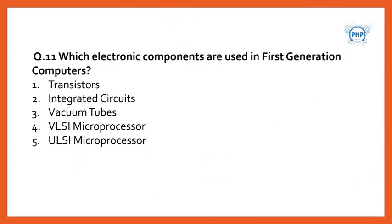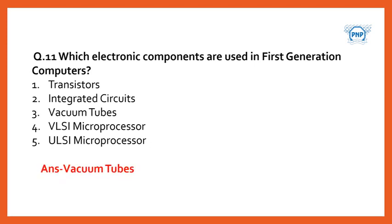Which electronic components are used in first generation computers? The options are transistors, integrated circuits, vacuum tubes, VLSI microprocessor, and ULSI microprocessor. The answer is vacuum tubes.